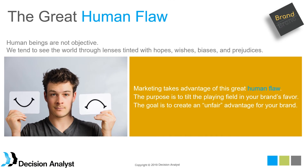As human beings, we are actually flawed — and the reason is that we lack objectivity. We like certain things and dislike others. We view the world through lenses tinted with our own hopes, dreams, biases, and prejudices. This is essentially why we have different political parties, different religions, different hobbies, and so on. Marketing is all about taking advantage of this human flaw — this lack of objectivity. The ultimate goal of a brand is to create a bias or prejudice in favor of your brand, so that consumers will choose it over a competitor.